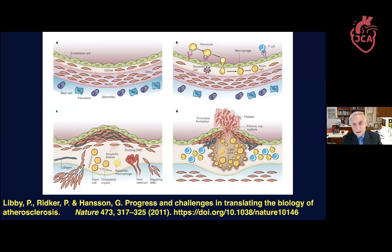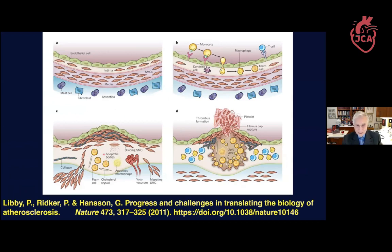When we transition from the normal human arterial wall, leukocytes enter as unwelcome visitors to the intima. There is a phase of progression involving processes that Dr. Ross advocated in the 1970s, as well as cell death in the advanced atherosclerotic plaque. Ultimately, disruption of the plaque causes the clinical complications that bring patients to our attention most dramatically.